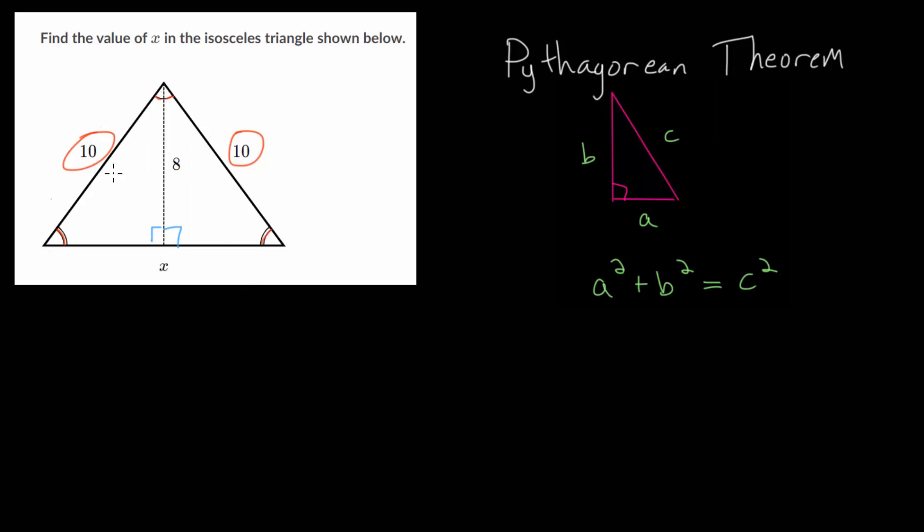So angle-side-angle, these two triangles are congruent with each other, and that means that these two angles will be equal and they're also supplementary. If they're equal and they add together to 180 degrees, they both have to be 90 degrees.